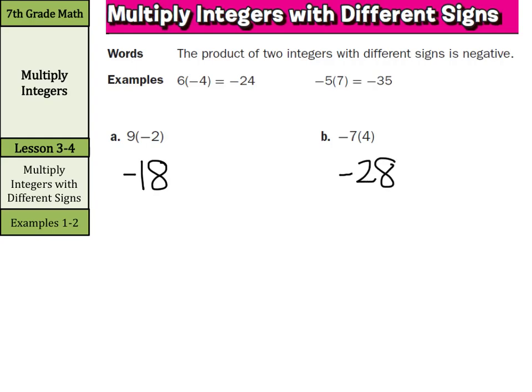One thing as we talk about multiplying integers and eventually dividing integers, the rules we use for multiplying and dividing integers are different than the rules we use for adding and subtracting integers. They are two completely different sets of rules that you do not want to mix.